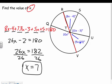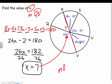Sometimes it might say find the measure of arc QV. Then I'd have to plug 7 in for x. So I would take 20 times 7 and get 140 degrees. You can use that information if needed.